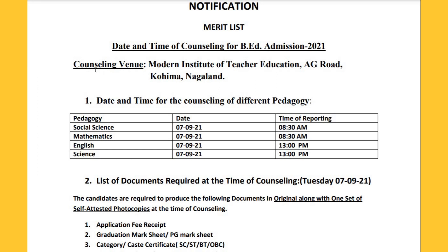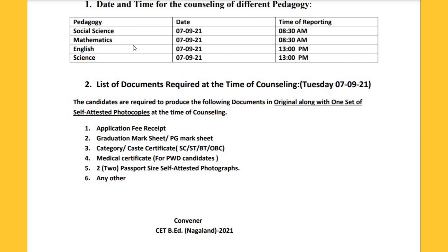The counseling venue is the Modern Institute of Teacher Education, A.G.O. For social science, the date is 7th September and the timing is 8:30 AM. For mathematics, the date is also 7th September at 8:30 AM. For English and science, it is the same day at 1 PM.